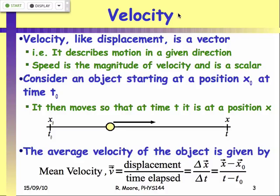We want more information than just displacement, so we define velocity — the rate of change of displacement. If you start at position x₀ at time t₀ and move to position x at time t, the mean velocity — the average velocity — is the total displacement divided by the total time. This is a macroscopic definition; it doesn't necessarily mean the instantaneous velocity at any point equals this. It just means that averaged over the entire trip, you get this quantity.